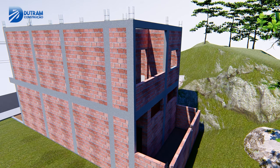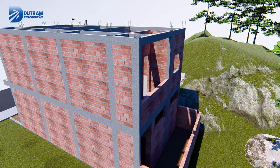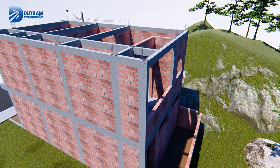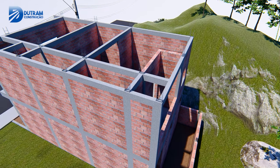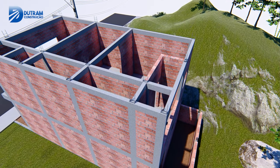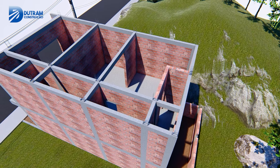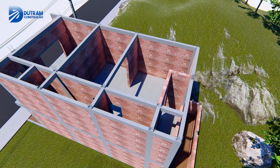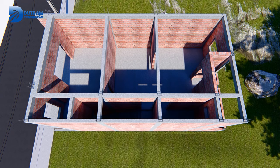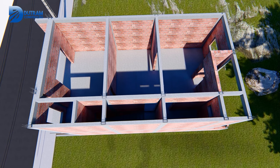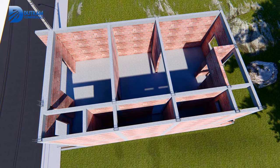Aqui com a vista superior, vou deixar também as dimensões desses ambientes do primeiro pavimento. O acesso principal vai acessar diretamente a sala, que tem uma abertura bem ampla integrando uma sala de jantar com uma sala de TV. Além de ter a porta de acesso ao banheiro e também de acesso à área de serviço na parte dos fundos.